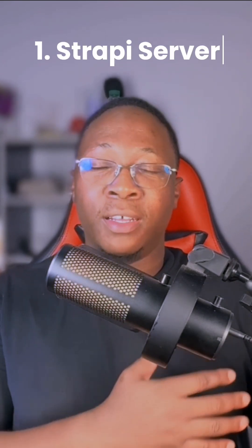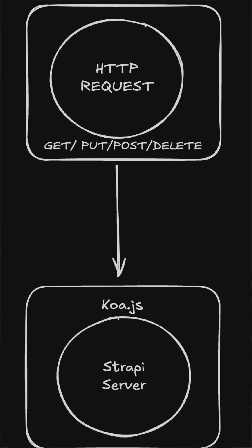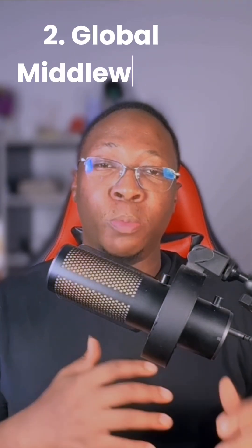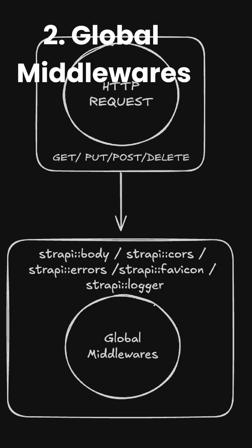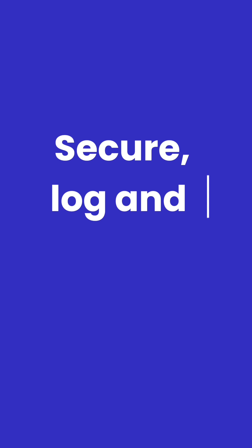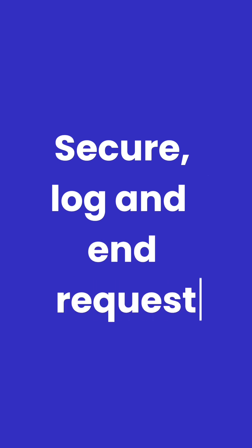First, your request hits the Strapi server, which is built on Koa.js. It passes through the global middleware. In the world of Strapi, think of this as a reception team — it can secure, log, or even end the request early if needed.